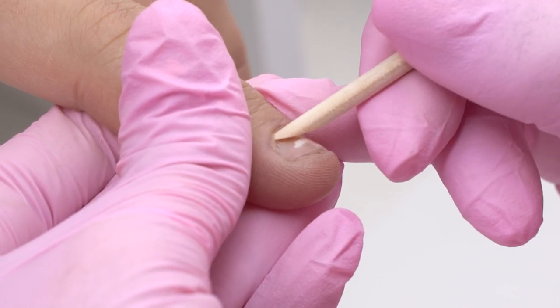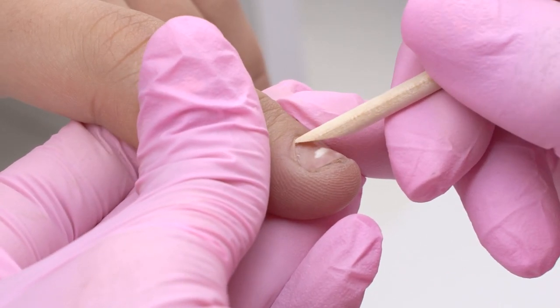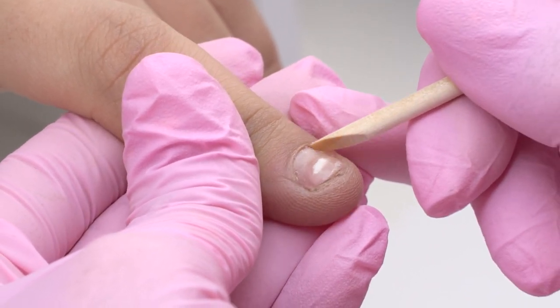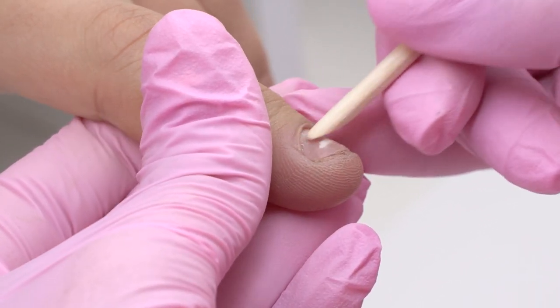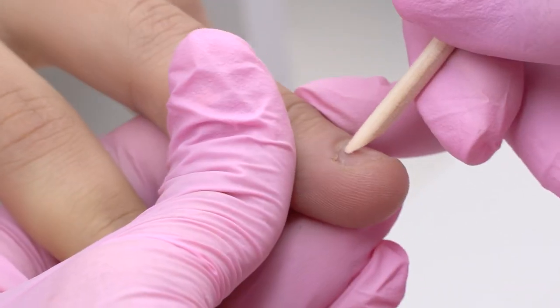First things first, we need to open up the cuticle pocket with an orange stick. For such spreading cuticle, using an orange stick is less traumatic and painful.